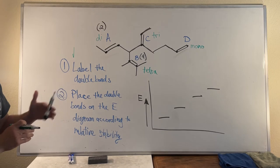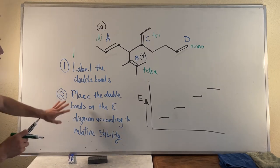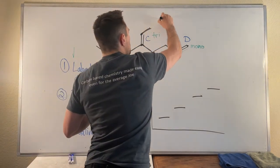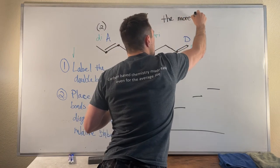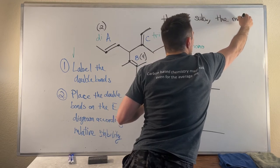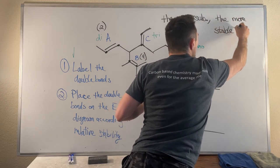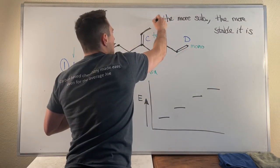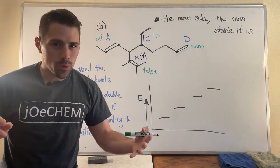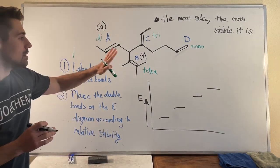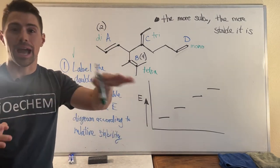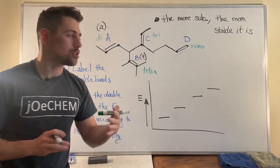Now that takes care of part one of this problem. Now with part two, the rule of thumb here is the more substituted you are, the double bond, the more stable it is. A good way to remember that is that the more neighbors you are attached to the better off you are, you're surrounded by more people.